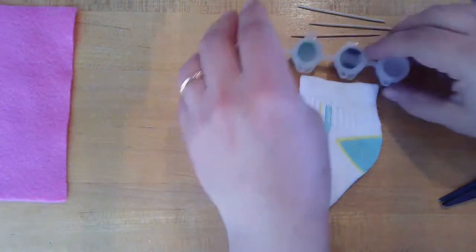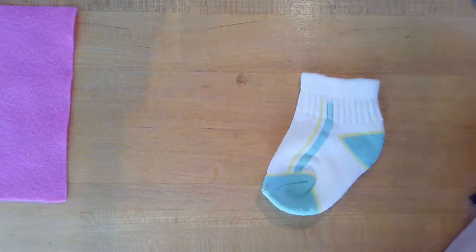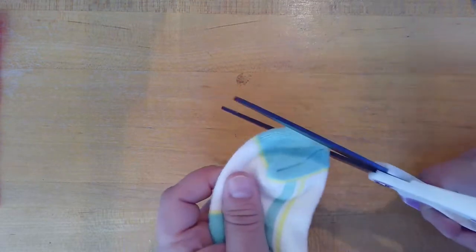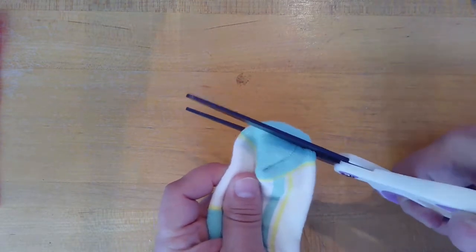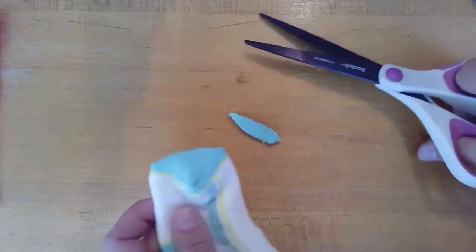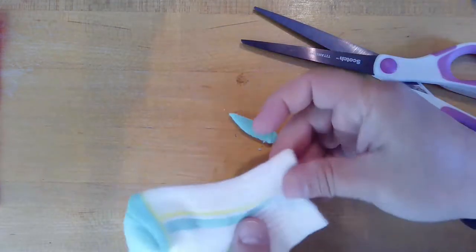All right, to begin with, clear everything away except for your baby sock. You're going to start with the toe end, and you're going to trim the very tip of the toe off with your scissors, like that.